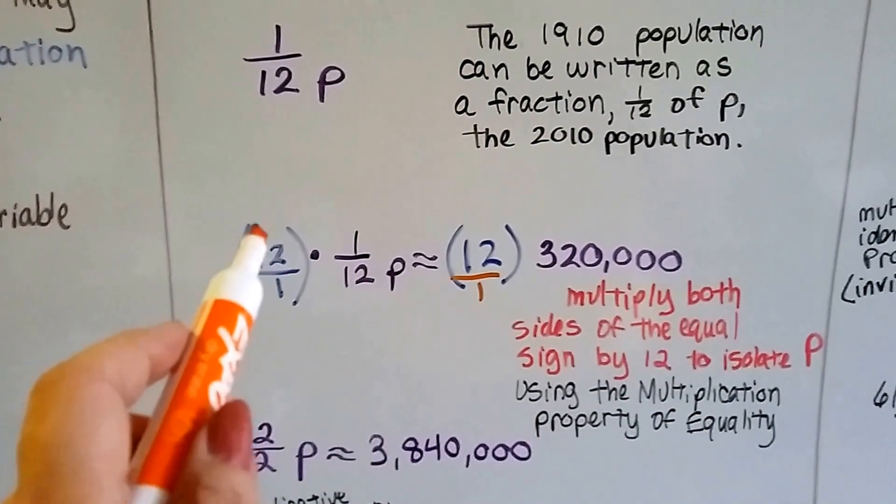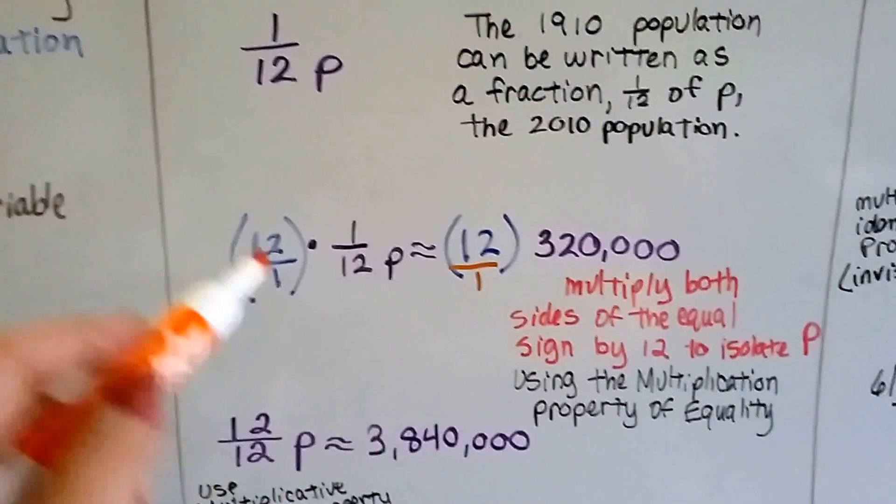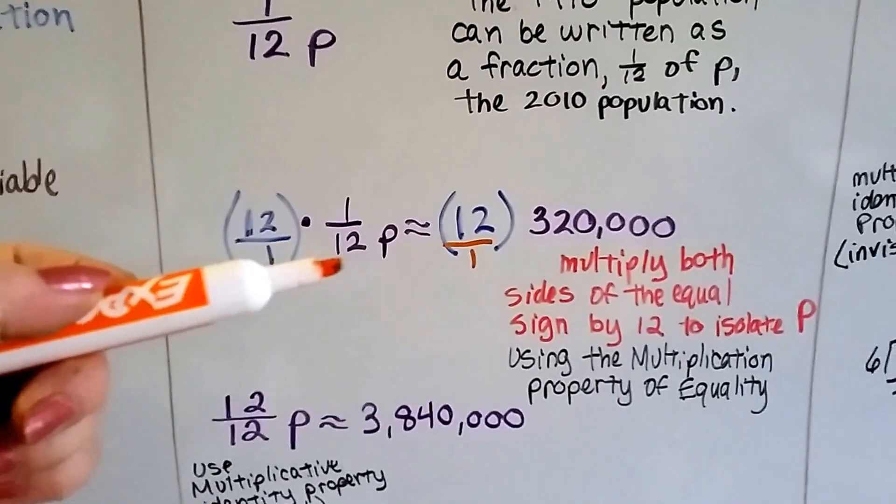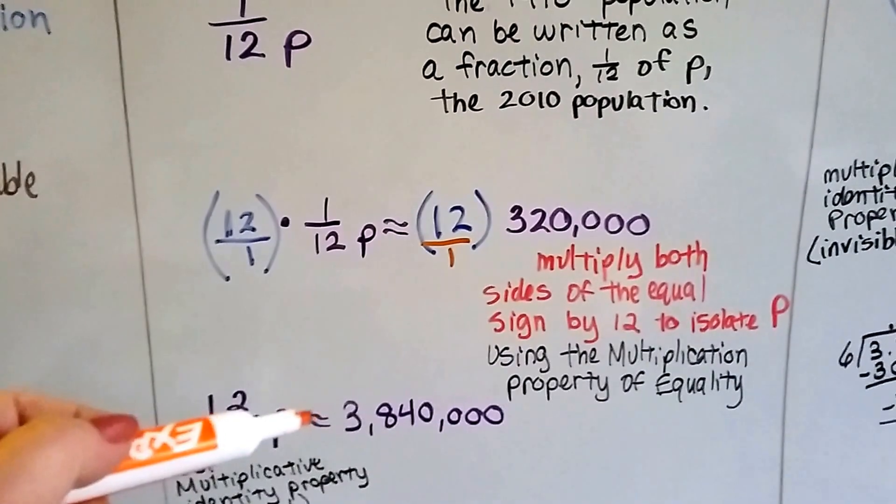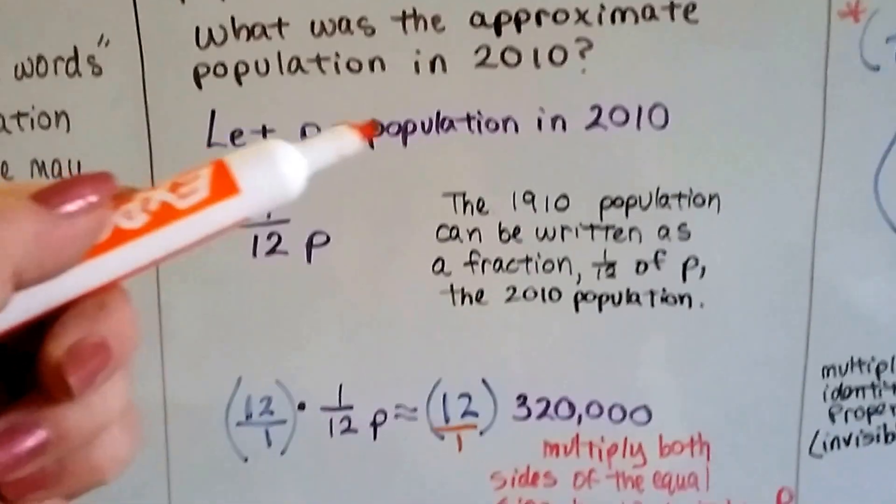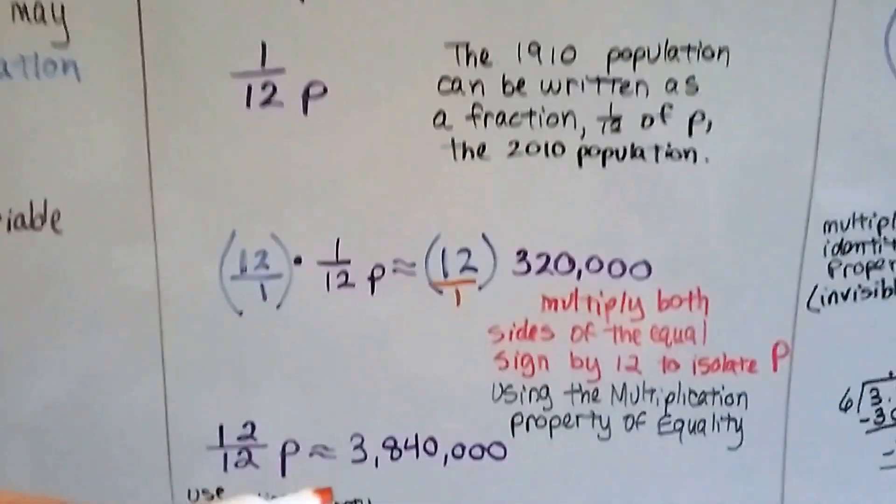We multiply both sides by 12 over 1, and we get 12 over 12P on this side. And I'm using the approximate symbol because these are approximate populations. So it's not an equal.